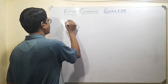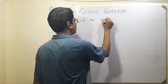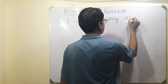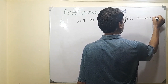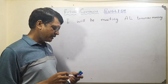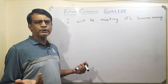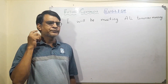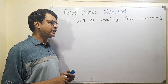For instance, you say: I will be meeting Ali tomorrow morning. If you want to mention a specific time, you can say: I will be meeting Ali tomorrow morning at 10. So some specific time can come there as well.